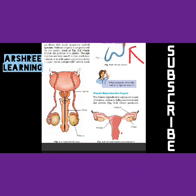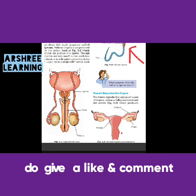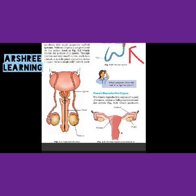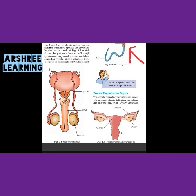The sperms are very small in size. Each has a head and a middle part, and they appear as a single cell. If we imagine that we are produced from our parents, then in the beginning all human beings were in the form of sperm. These sperms are produced from the male reproductive system in millions.